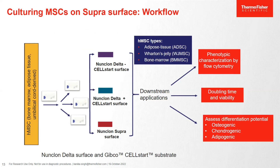We used three different types of MSCs for the experiment. The first one is adipose tissue-derived ADSCs. The second is Wharton's Jelly MSCs or WJ MSCs. And the third one is bone marrow-derived MSCs. These three cell types were cultured on three different surfaces. The first surface is Nunclon Delta surface, which is the regular plastic surface used in the lab to grow cells, not coated with any ECM. The second surface is Nunclon Delta surface coated with CellStart. And the third surface is the Nunclon Supra surface, which is not coated with any ECM.